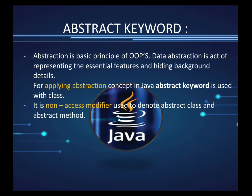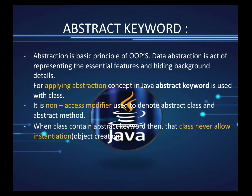The abstract keyword is a non-access modifier used to denote an abstract class and abstract method. When used with a class it creates an abstract class, and when used with a method it creates an abstract method. A class containing the abstract keyword never allows instantiation.